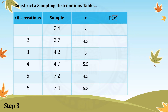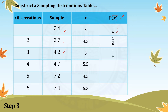For step 3, add a column for the probability of the sample mean. We distribute probabilities equally because we listed all our samples. In this example, there are 6 possible observations; therefore, the probability of each sample mean is 1/6. There is only 1 possible outcome for each sample pair, and 6 is the total number of observations, so we assign 1/6 to each observation.